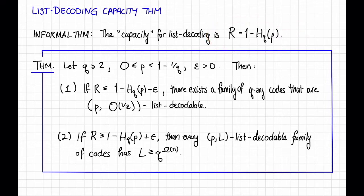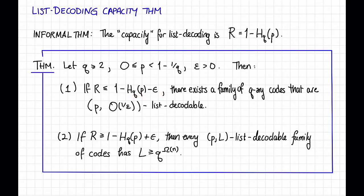More formally, we have the following theorem. Let q be greater than or equal to 2, and let p be greater than 0 and less than 1 minus 1 over q, and let epsilon be greater than 0. Then the following two things hold. First, if the rate r is just a little bit less than the threshold 1 minus H_q of p — say it's that minus epsilon — then there are good list decodable codes of that rate up to radius p. In particular, there exists a family of q-ary codes that are (p, O(1/epsilon)) list decodable.